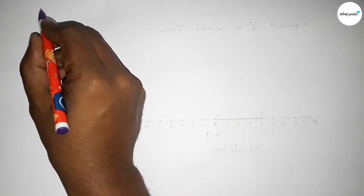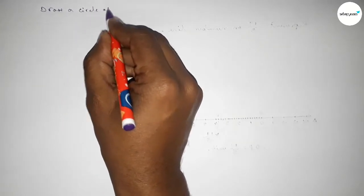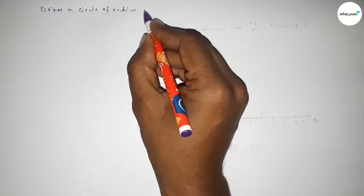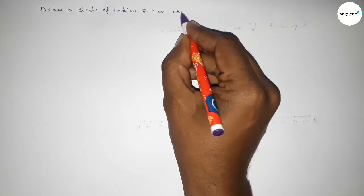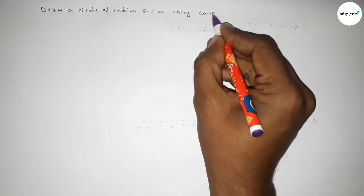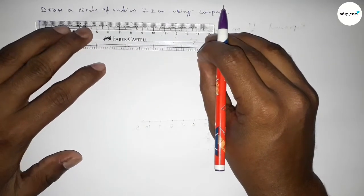Hi everyone, welcome to SI Share Classes. Today in this video, we have to draw a circle of radius 7.2 centimeter using a compass. So let's start the video. First of all, we have to draw a line of length 7.2 centimeter.